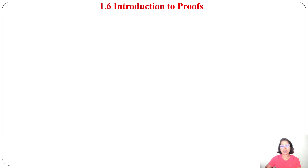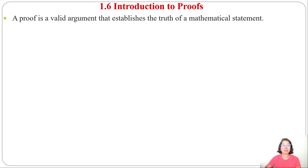Let's discuss the last part of mathematical logic, that is introduction to proof. Some statement will be given and we need to give a valid argument to prove that that statement is true. A proof is a valid argument that establishes the truth of a mathematical statement.